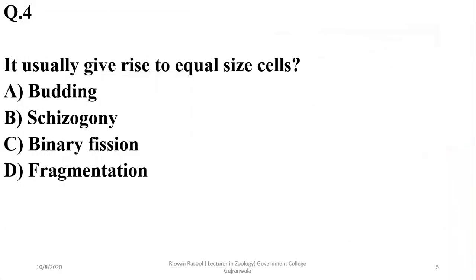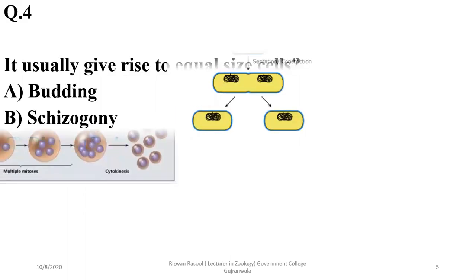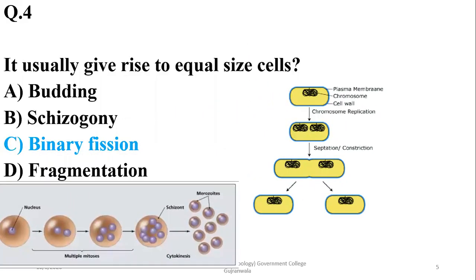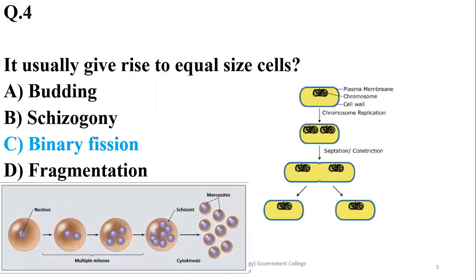Number four: it usually gives rise to equal-size cells. Equal-size cells can be produced by the process of binary fission. Other types of divisions such as budding, multiple fission, and fragmentation usually produce cells of unequal size.